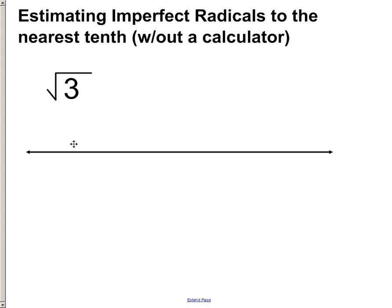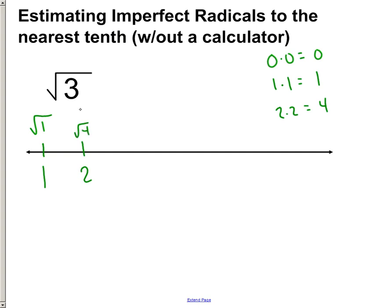Let's do this two more times. Radical 3 — where does this fall on a number line, between what two whole numbers? Well, 0 times 0 is 0, 1 times 1 is 1, and 2 times 2 is 4. So 3 falls right between 1 and 4. Here's 1, and that's radical 1. Rather than putting 2 right here as radical 4 and trying to squeeze in radical 2 and radical 3, don't do that. Just build it up nice and slow: here's radical 2, here's radical 3, here's radical 4. My spacing's pretty good — not perfect, but pretty good.